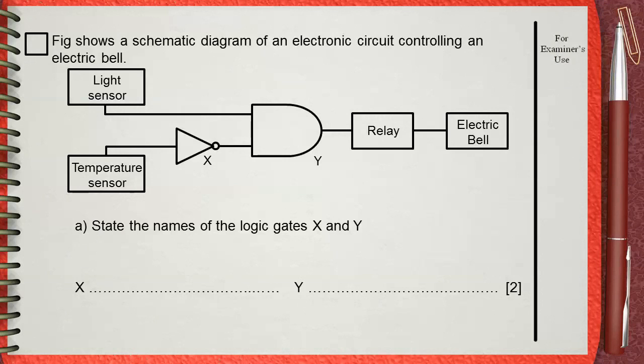Figure shows a schematic diagram of an electronic circuit controlling an electric bell. Part A: State the names of the logic gates X and Y.